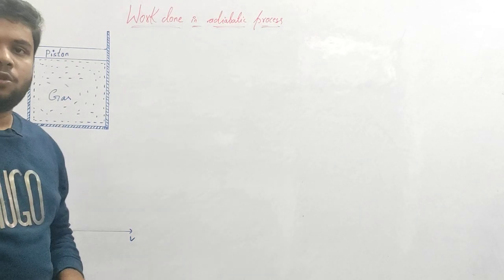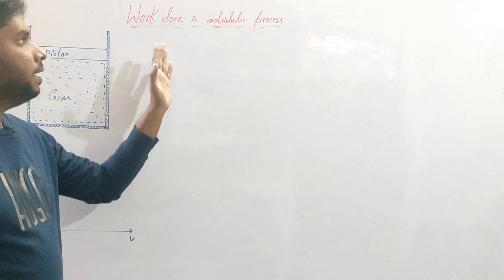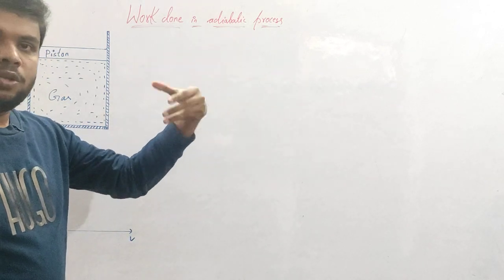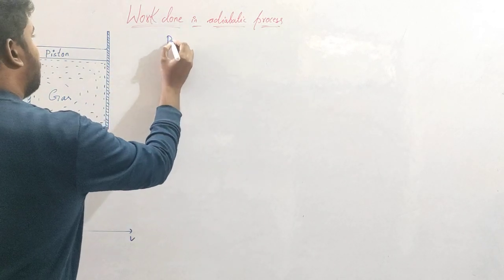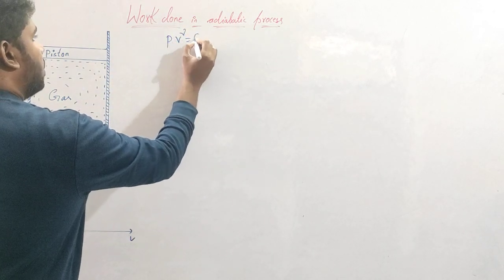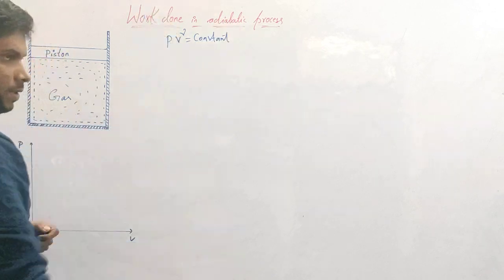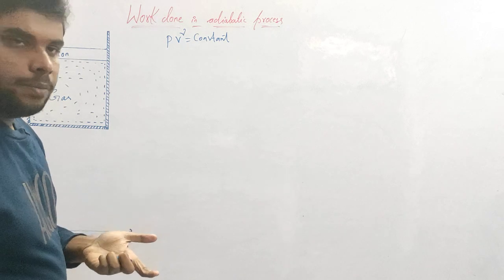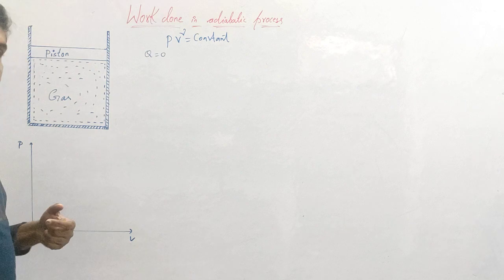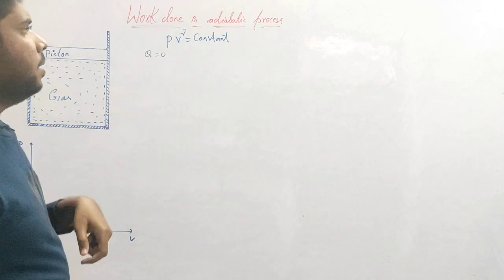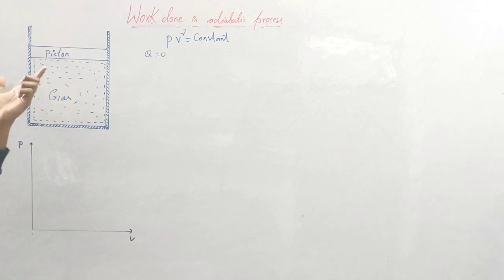Hello everyone, welcome. In this video we are going to derive the expression for work done in an adiabatic process. In the previous video we discussed the adiabatic process and derived the law pV^γ = constant. The adiabatic process is the process in which there is no heat transfer, meaning q should be zero. Consider a piston and cylinder arrangement with gas inside the cylinder.